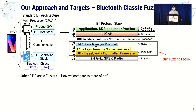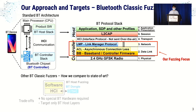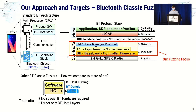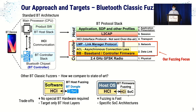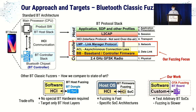Looking at fuzzers targeting Bluetooth Classic protocols at the time of writing: BT host fuzzing is easy to get started because it requires no special hardware, but it only works for host layers. Emulation is very fast and can reach all layers, but requires a lot of architectural knowledge, limiting which devices can be tested. Our work is similar to the first approach but targets the lower layers by using external hardware. The trade-off is a somewhat slower fuzzing process, but the advantage is we can test a multitude of devices.